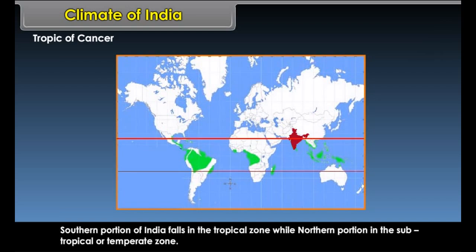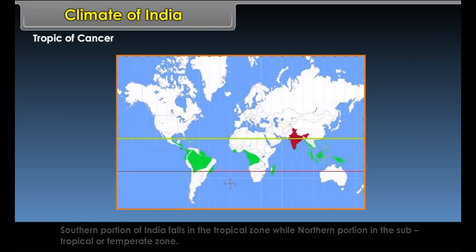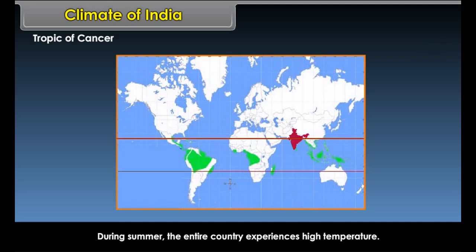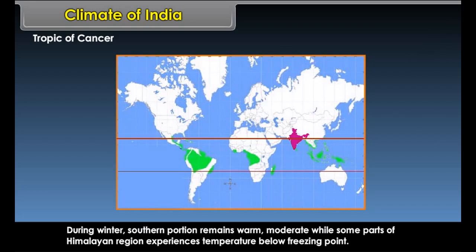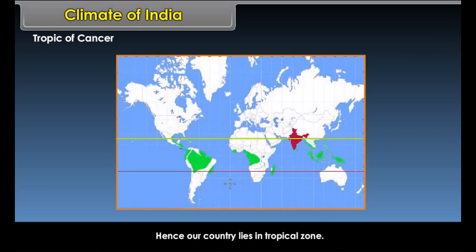The southern portion of India falls in the tropical zone, while the northern portion lies in the subtropical or temperate zone. During summer, the entire country experiences high temperature. During winter, the southern portion remains warm and moderate, while some parts of the Himalayan region experience temperatures below freezing point. Hence, our country lies in the tropical zone.